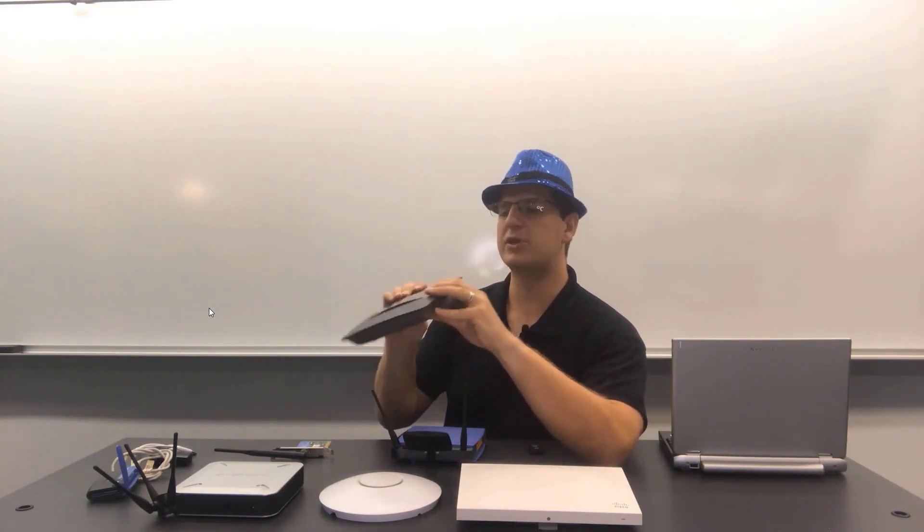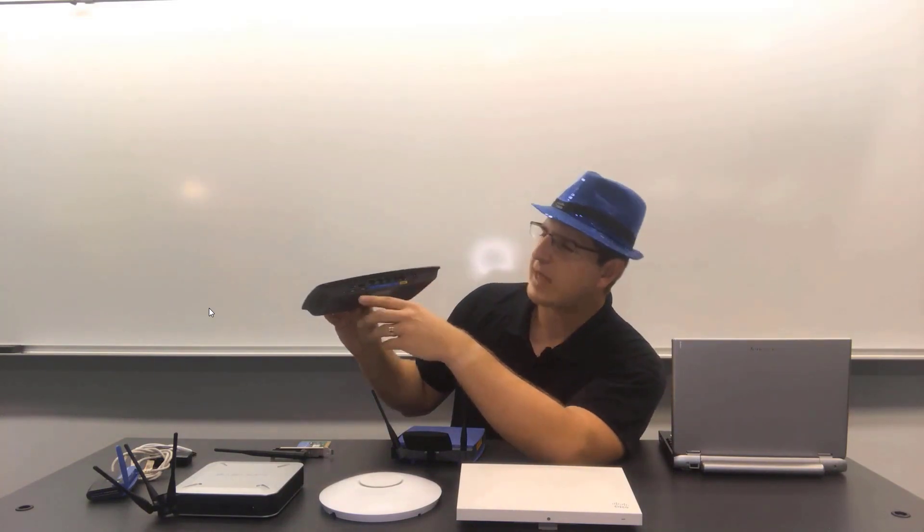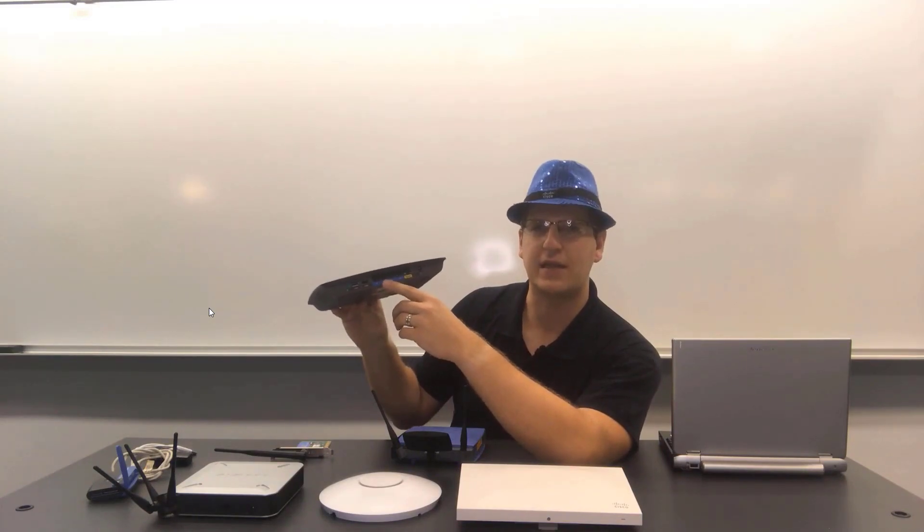Now, these wireless routers commonly have three functions. Those three functions being, number one, a switch built in. For example, I've got a set of blue ports here. There are four of them. That's an integrated switch in this wireless router. You plug your wired devices into that switch.